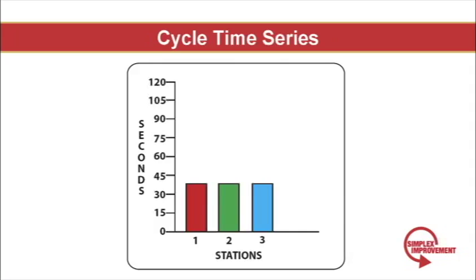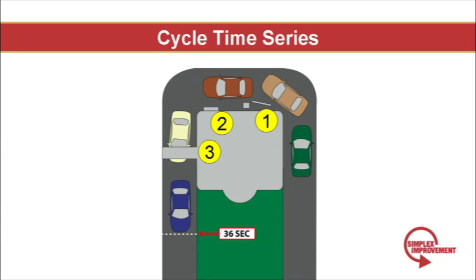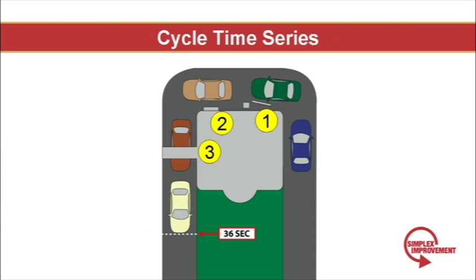So note that the cycle times are balanced evenly at 36 seconds for each station. In other words, I observe each station completing their work and sending on the customer to the next station every 36 seconds. I also observe a happy customer leaving every 36 seconds.